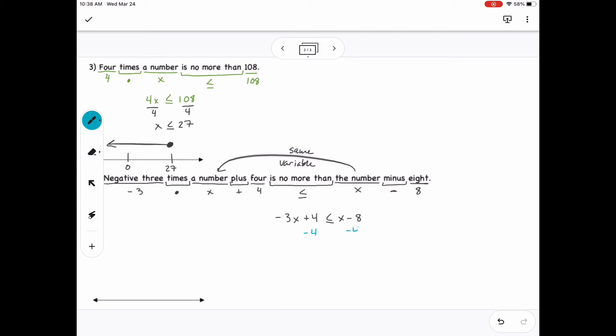And then from there, I'll need to solve. So I subtract 4 from both sides, gets me negative 3x less than or equal to x minus 12. Then I'll subtract x from both sides to put those like terms together. That gets me negative 4x less than or equal to negative 12. And here I'll divide both sides by negative 4, which will allow me to switch the inequality sign around. So then I'll get x is greater than or equal to 3. And so then on my number line, I'll graph 0 and 3. 3 is on the right of 0. And then I'll have a closed circle, and then everything to the right will be true.